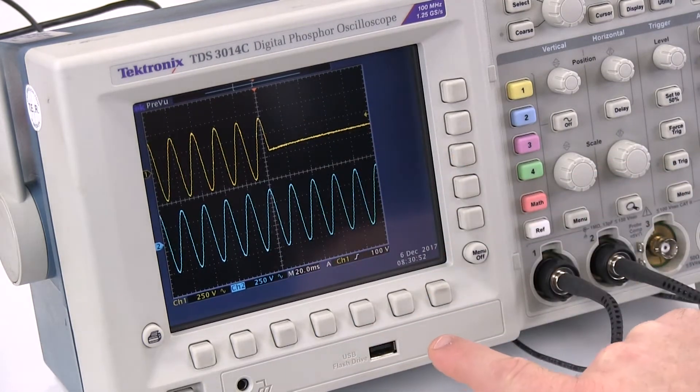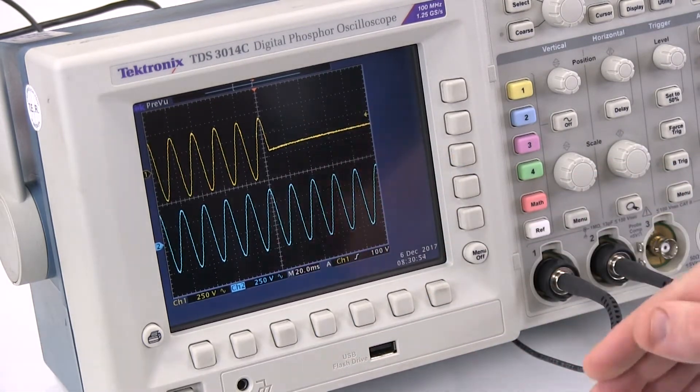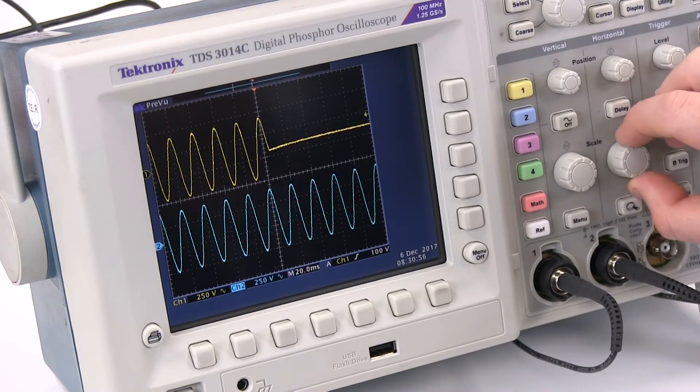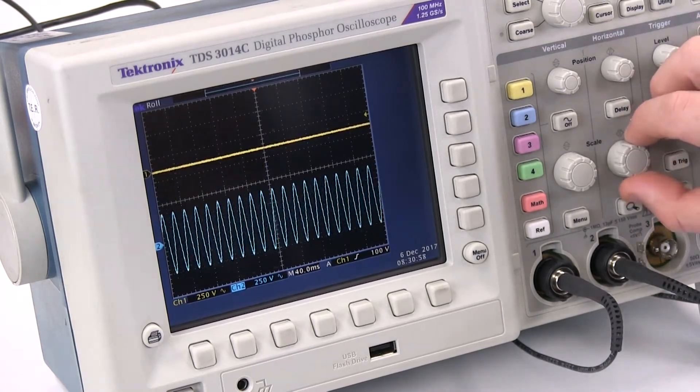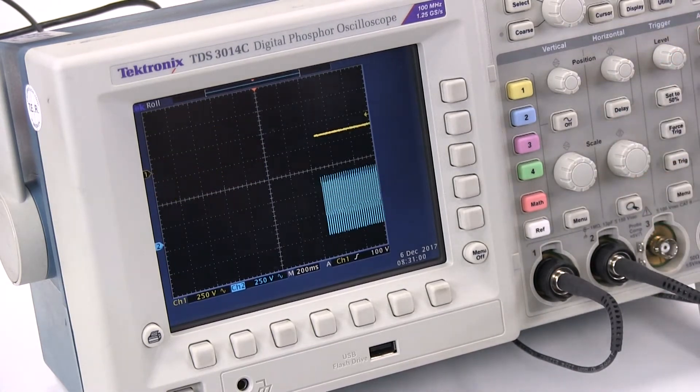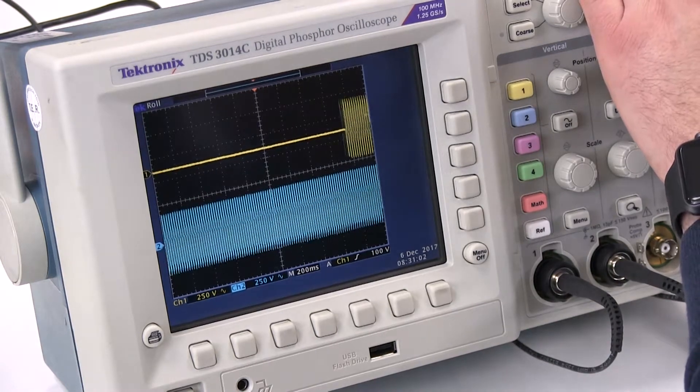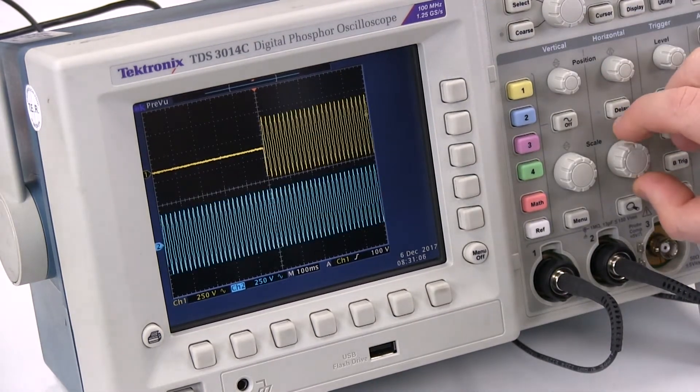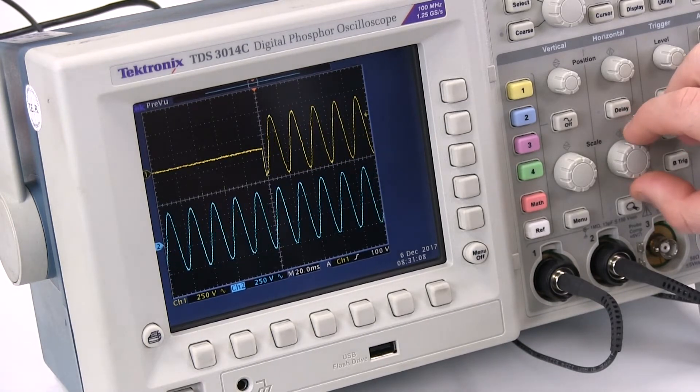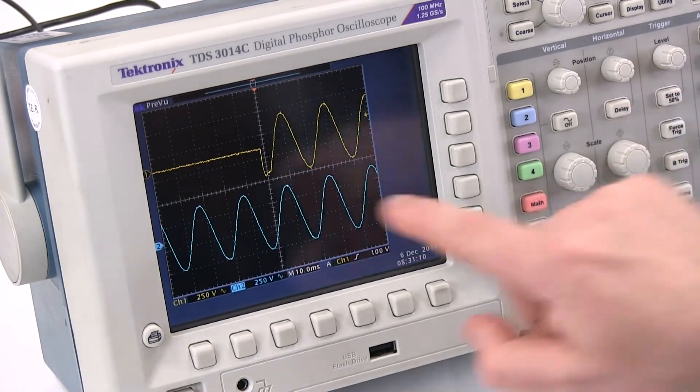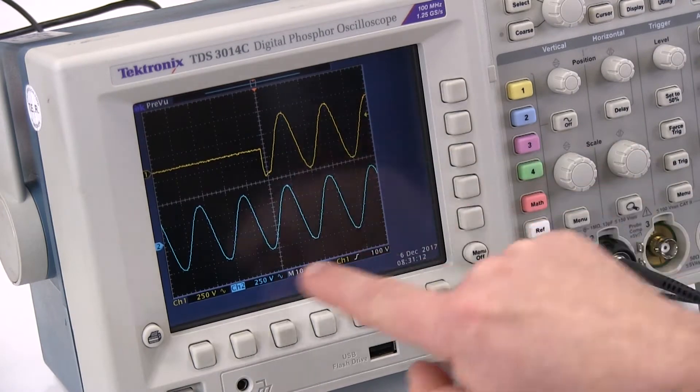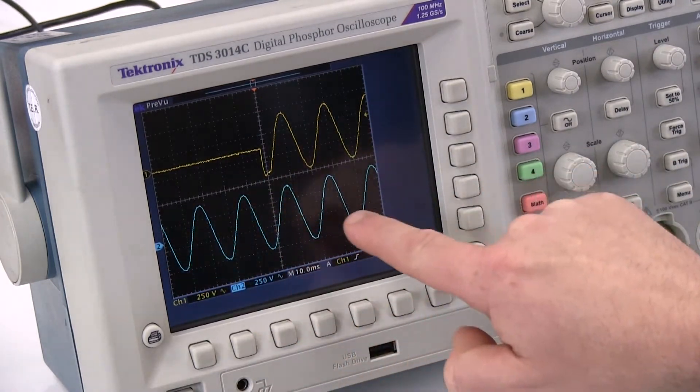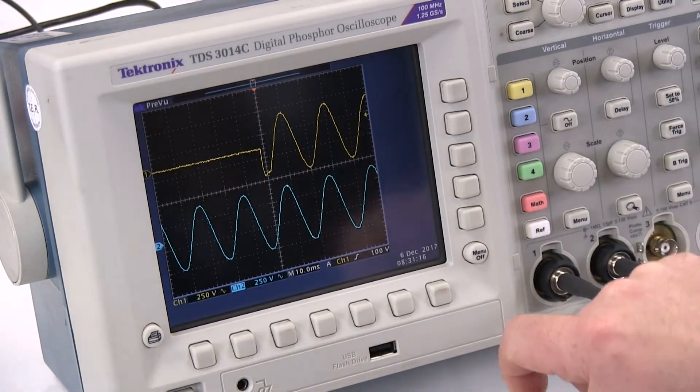Now if I reverse that process in that we return the main supply back onto the UPS, if I slow down my trace once again and reapply that main supply and again stop the trace, if I zoom into that trace again, even though the main supply is returned, the output voltage waveform from our UPS system remains completely unaffected.